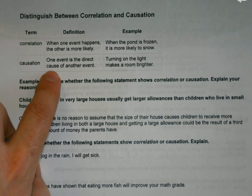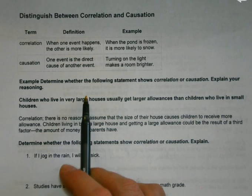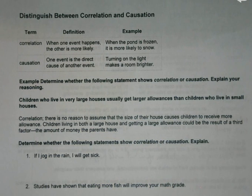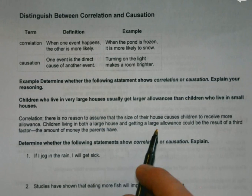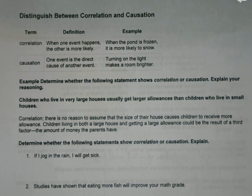Causation, however, means one event directly causes another. If you turn on a light, a room's going to be brighter because there is more light. Example: children who live in very large houses usually get larger allowances than children who live in small houses — that's correlation. There's no reason to assume the size of the house causes children to receive more allowance. Children living in a large house and getting a large allowance could both be a result of a third factor — the amount of money the parents have.